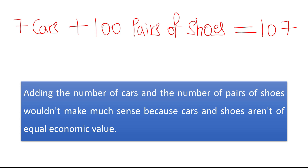Adding the number of cars and the number of pairs of shoes wouldn't make much sense because cars and shoes are not of equal economic value. On what basis can we say 7 cars plus 100 pairs of shoes equals 107? It is wrong.